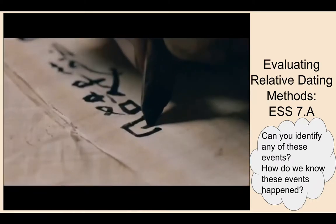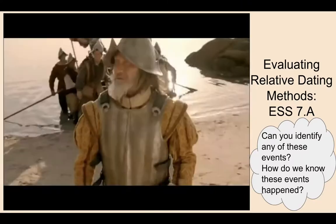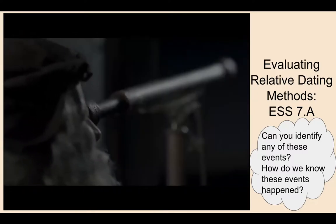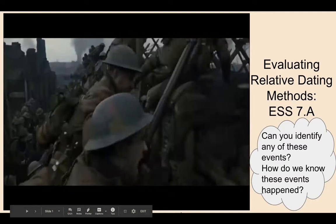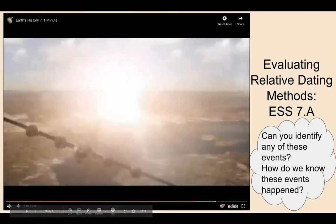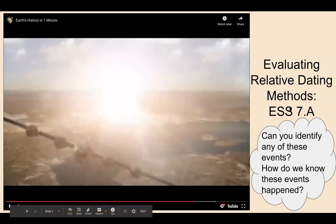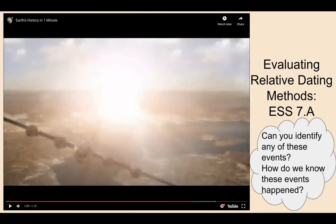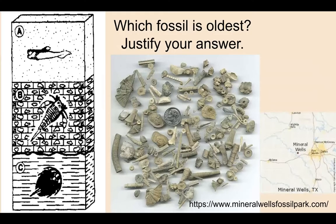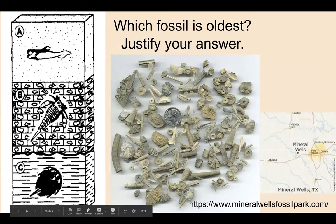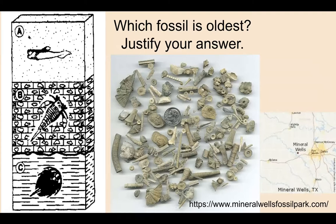Think about whether you were able to identify any of those historical events. Scientists can use a variety of different ways to date events and objects — we have historical or written accounts, but we also have fossil evidence. As a pre-assessment, if we take a look at this image showing fossils labeled A, B, and C, which fossil do you think is the oldest, and why?